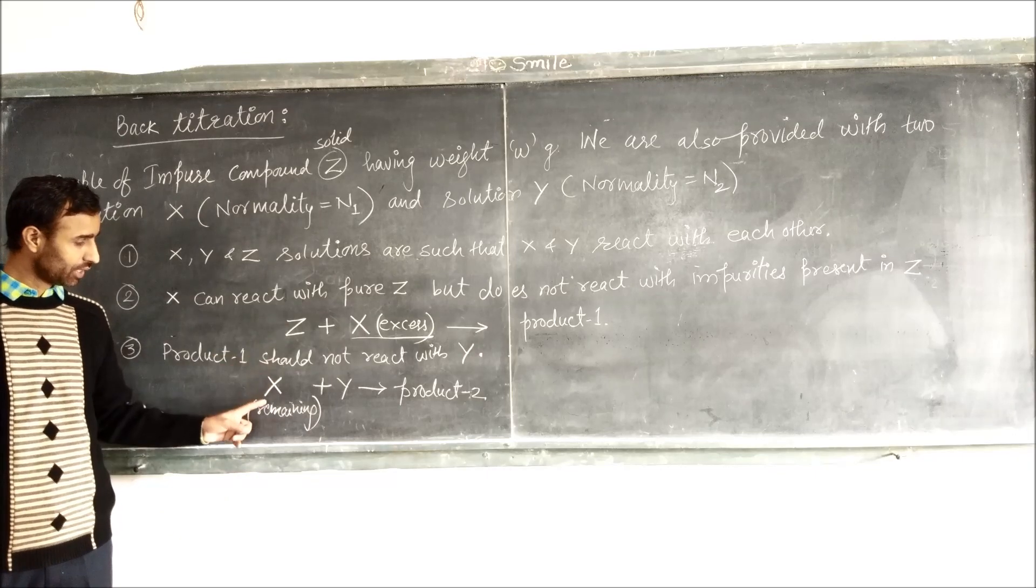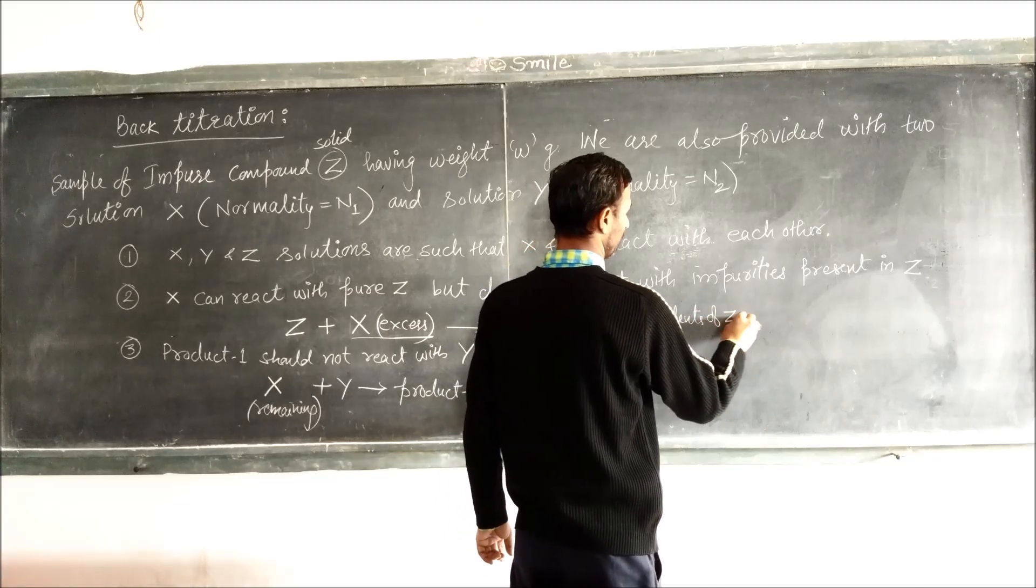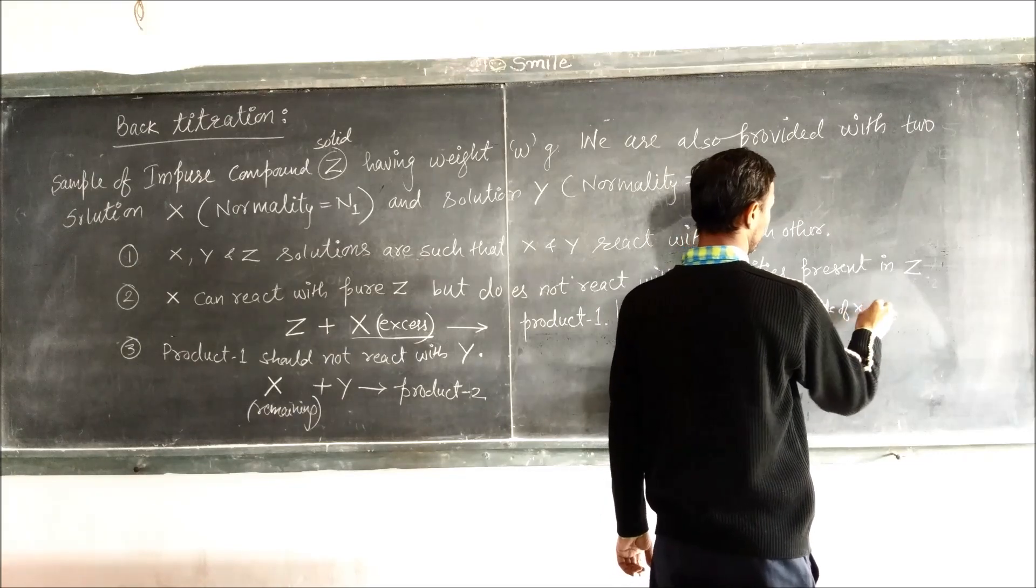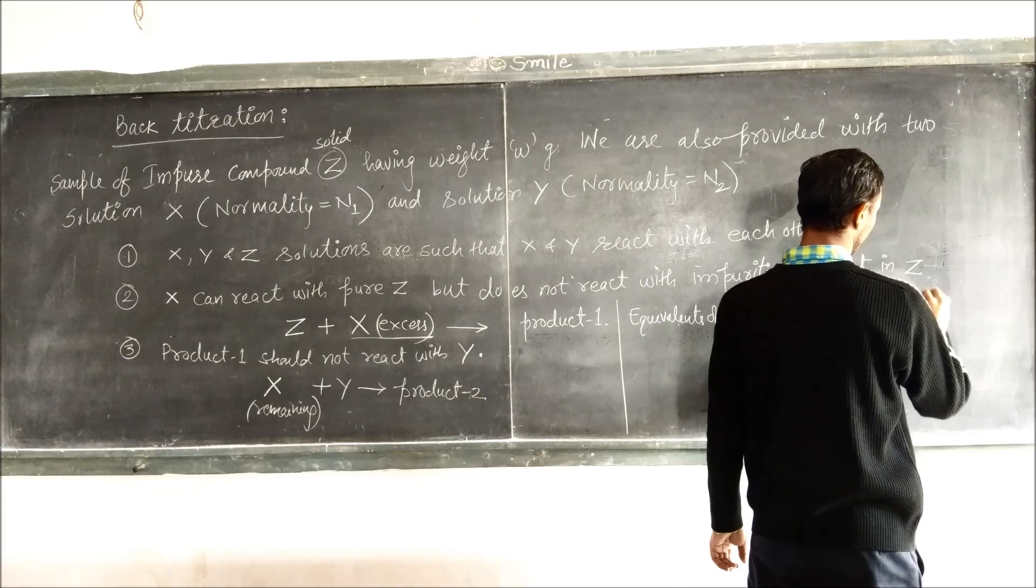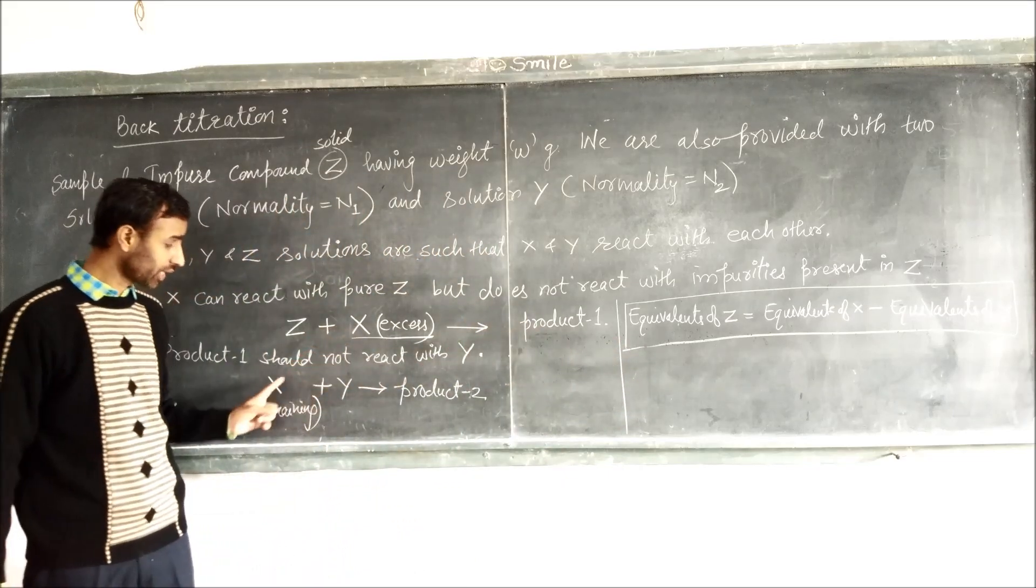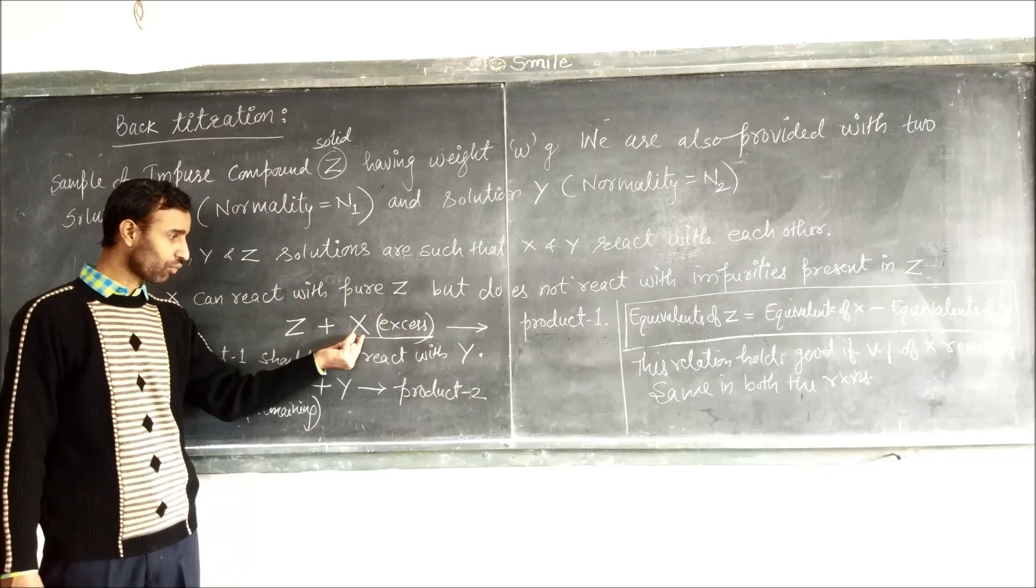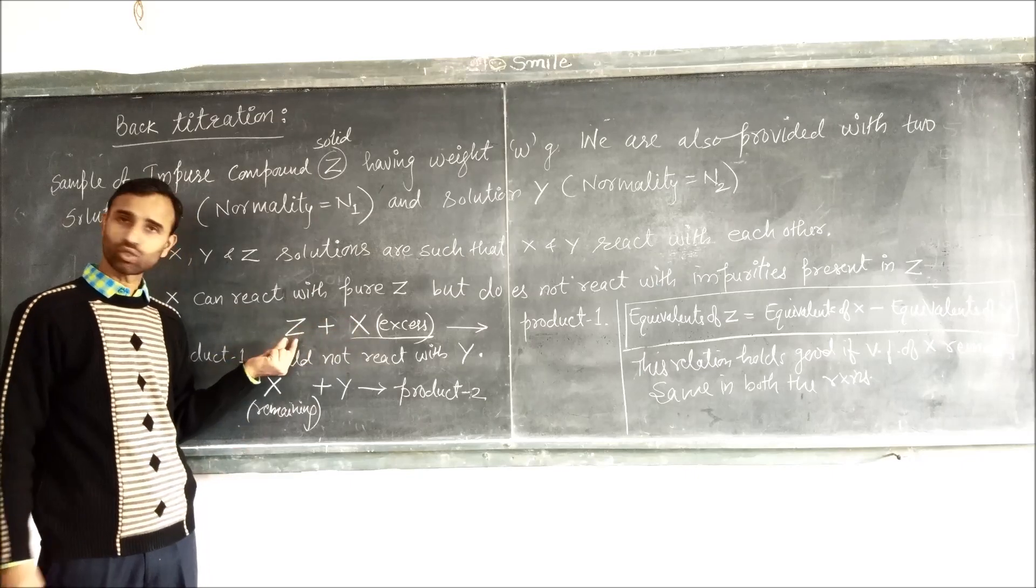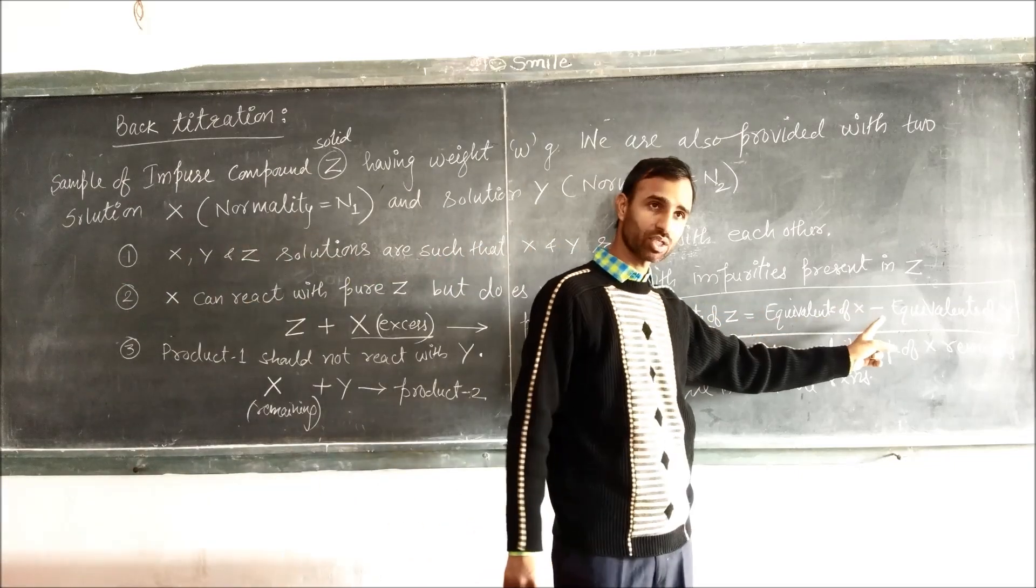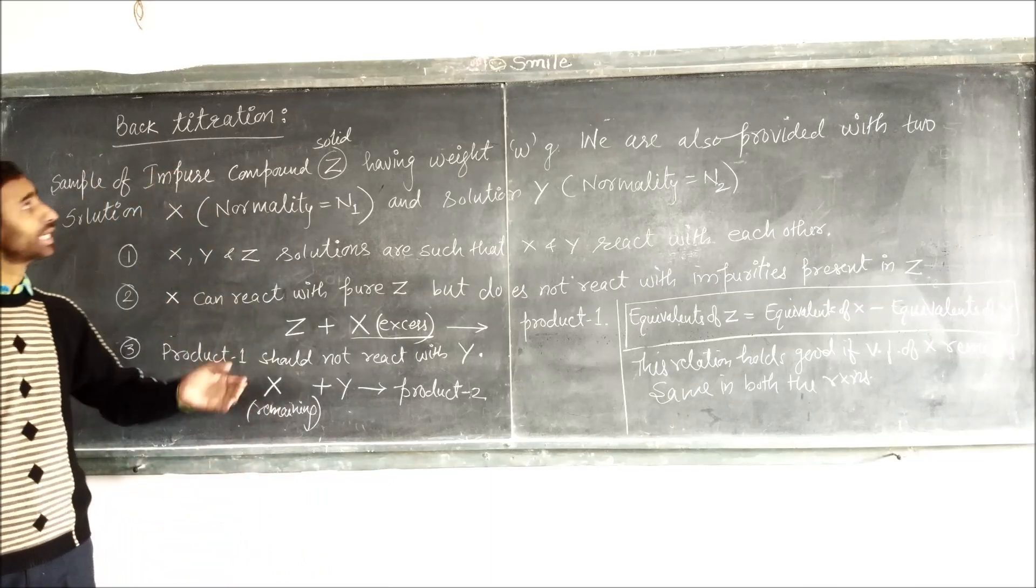So by using this, equivalence of Z is equal to equivalence of X minus equivalence of Y. This is a relation which holds only when X has same valency factor in both the equations. So equivalence of X reacted here is equal to equivalence of Z, and equivalence of X remaining is equal to equivalence of Y used. So this is the fundamental behind back titration.